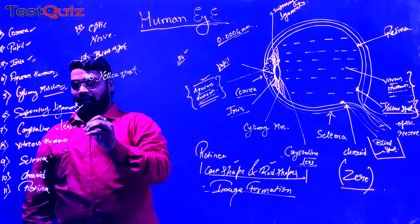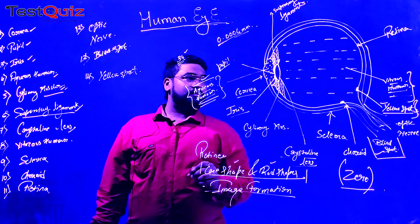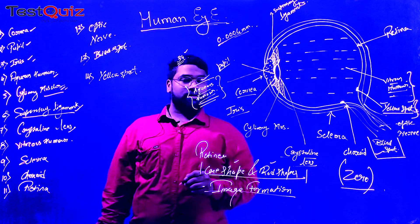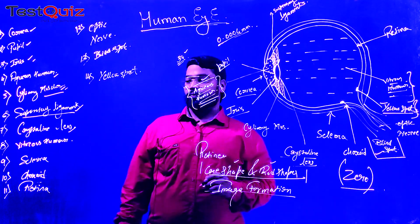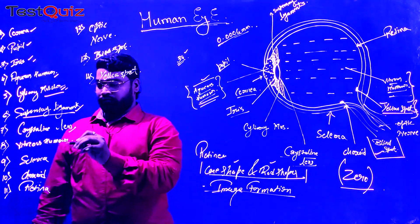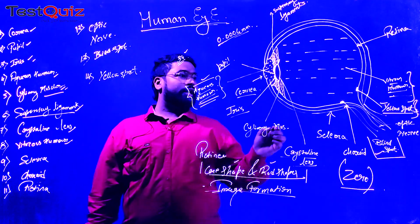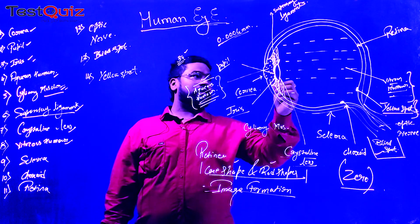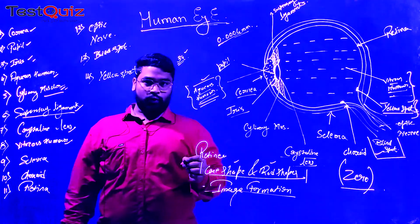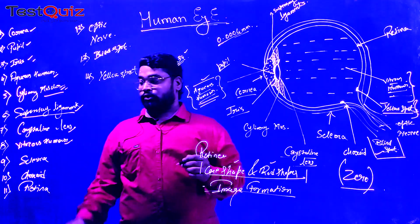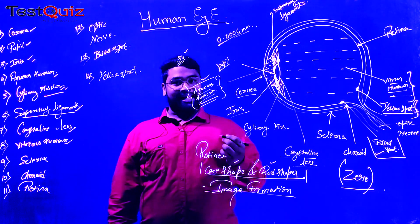Next we have the crystalline lens. A crystalline lens is a double convex lens where we can have a particular image formation at the yellow spot. Next, we have the vitreous humor — a fluid in between the crystalline lens and the retina. The refractive index of the vitreous humor will not increase; the refractive index has to remain fixed.